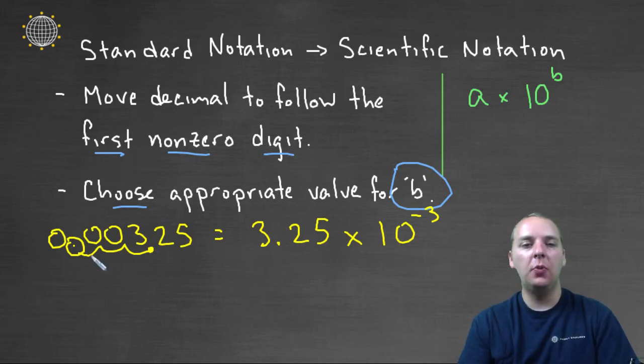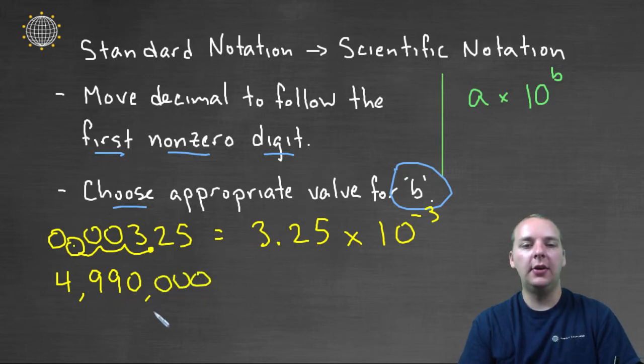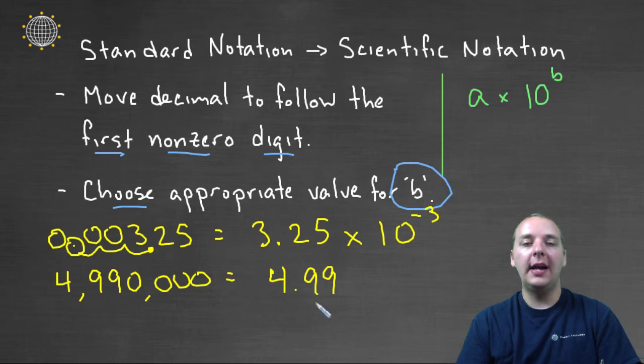Alright, let's try one more in closing. Let's say we had 4,990,000, four million nine hundred and ninety thousand. So we'd call this 4.99, but now 4.99 we would need to make larger to get to four million nine hundred and ninety thousand.